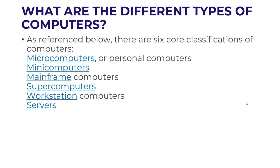There are six classifications of computers: microcomputers, minicomputers, mainframe computers, supercomputers, workstation computers, and servers. All these computers differ in computing power, processing capability, and storage capacity. Microcomputers are smaller in size and used in various ways. Workstations, supercomputers, and servers are highly dedicated computers meant for commercial and complex usage.